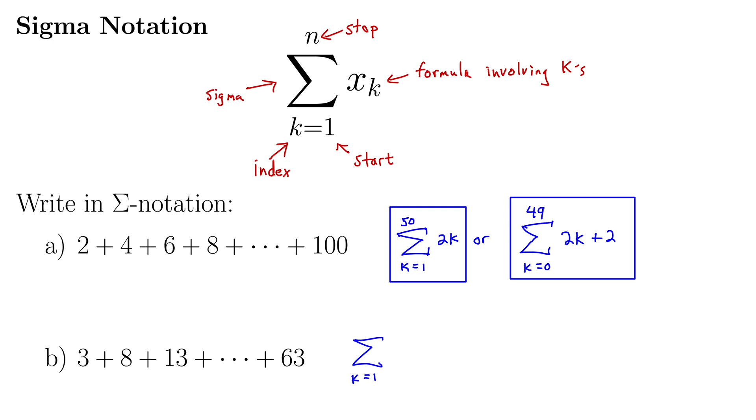Well again, there's many different correct answers. I will present one of them. How about 5k minus 2? If we put in 1, that gives us 3. If we put in 2, that gives us 8. If we put in 3, that gives us 13. So that's looking pretty good. We just need to figure out where to stop it.